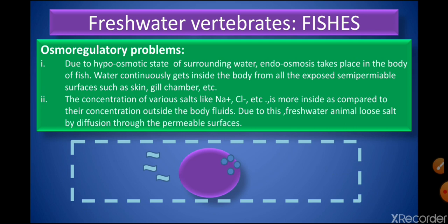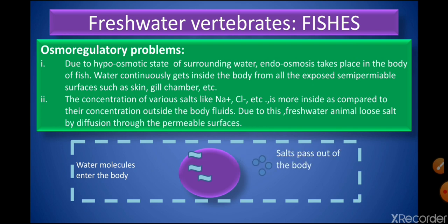Osmoregulatory problems faced by freshwater fishes: first, due to the hypoosmotic state of surrounding water, endosmosis takes place and water continuously enters the body through exposed semi-permeable surfaces such as skin and gill chambers. Second, the concentration of salts such as sodium and chlorine is higher inside the body than outside, so the freshwater animal loses salt by diffusion through semi-permeable surfaces.